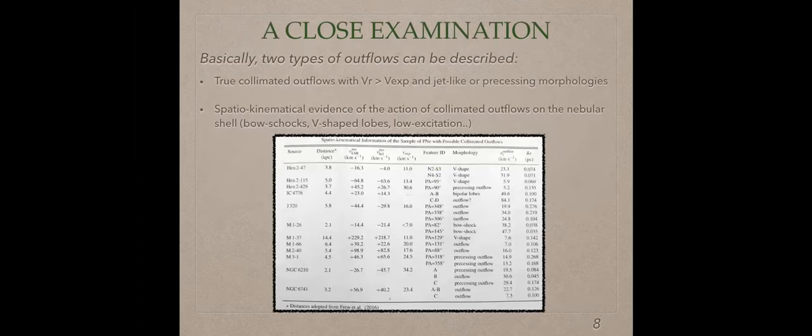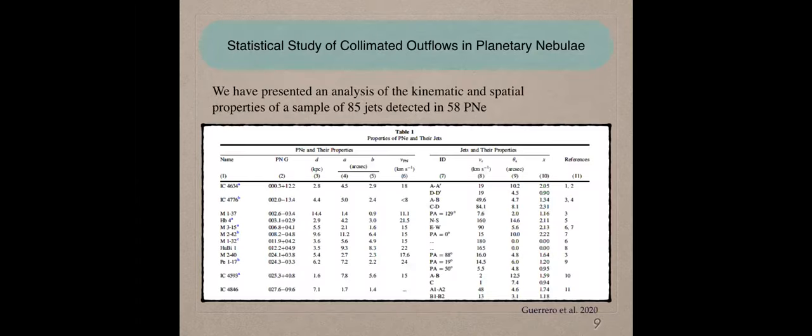Basically, there are two types of outflows can be described. First, true collimated outflow that have radial velocity bigger than expansion velocity of the planetary nebulae and jet light or precessing morphology. The second one is spatial kinematical evidence of the action of collimated outflow on the nebulae. This means the lobes that has a V-shaped. In this table, I show you a summary of the different characteristics of the planetary nebulae.